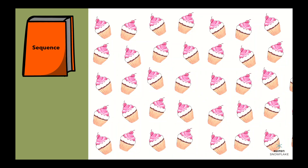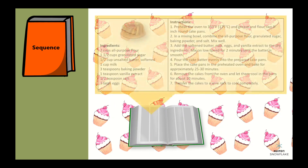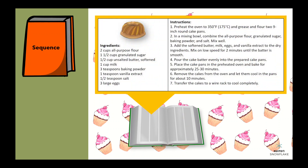For example, when we read a recipe, we follow the sequence of steps to bake a cake. The order in which the ingredients are added, mixed, and baked helps us understand how to make a cake.